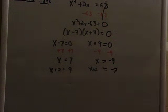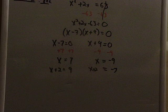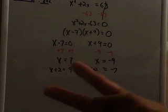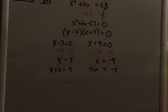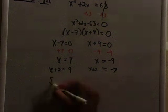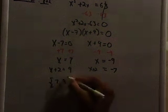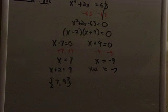And then if x equals negative 9, what's x plus 2? Negative 7. Okay, so we have two sets of solutions. We have two sets of solutions. One could be 7, 9. And the other could be negative 9, negative 7.